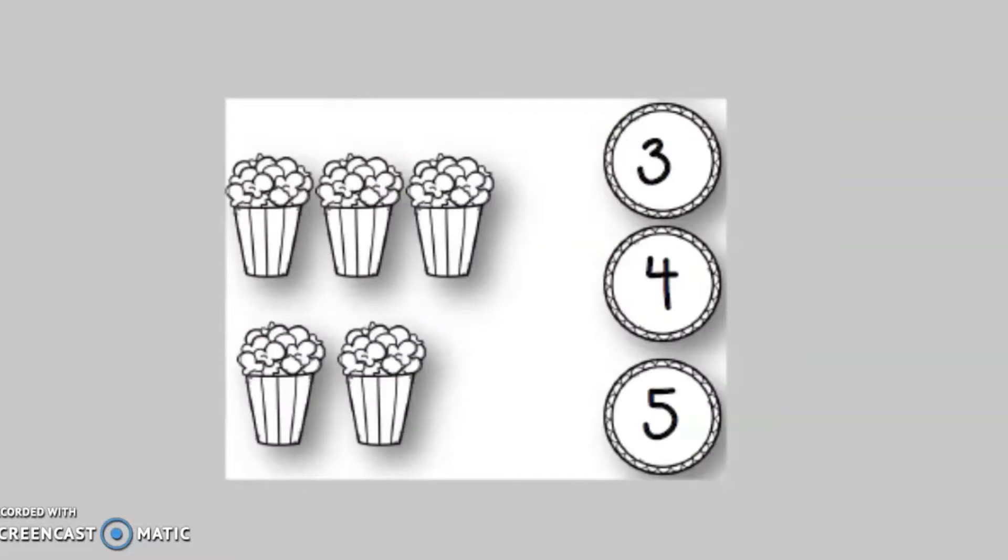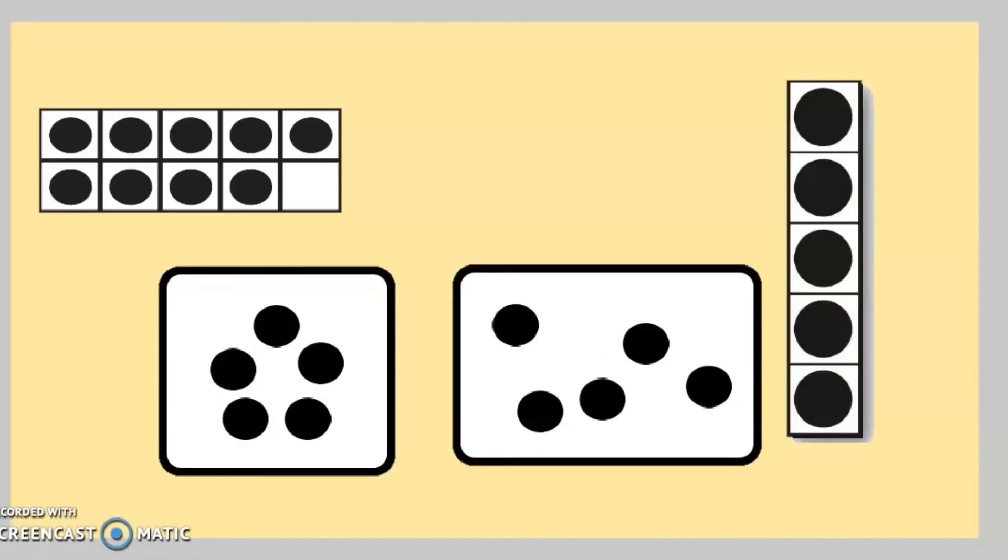In lessons seven through eleven you practiced matching pictures with numbers. One, two, three, four, five. Numbers can be shown in a lot of ways. Inside of ten frames, in circular formations, scattered, or in straight lines up and down. It's easier to count things when you mark them like this. One, two, three, four, five.